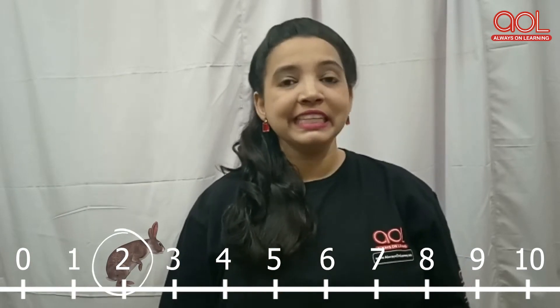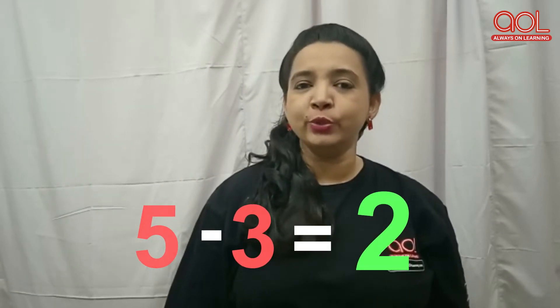Binny took some more backward hops. Binny was on number 5. After taking three backward hops, Binny landed on number 2. What does it mean? It means 5 minus 3 equals 2.